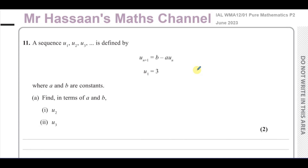The question says a sequence U1, U2, U3 is defined by a recurrence relationship: U(n+1) is equal to B minus A times U(n). U1 is defined as equal to 3, and A and B are constants. We need to find the terms U2 and U3 in terms of A and B.